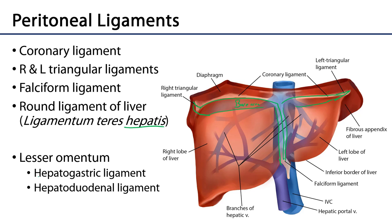We also have elements of the lesser omentum which are associated with the visceral surface of the liver. There is the hepatogastric ligament which attaches the liver to the stomach, and the hepatoduodenal ligament which attaches the liver at the porta hepatis to the duodenum.